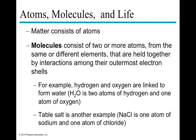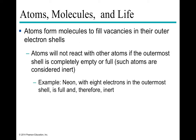Molecules form when two or more atoms from the same or different elements come together based on the interactions of their electrons. Water, for example, is comprised of two hydrogen atoms and one oxygen atom — you might recognize it as a Mickey Mouse molecule. Another example is sodium chloride: one atom of sodium and one atom of chloride come together to make table salt.